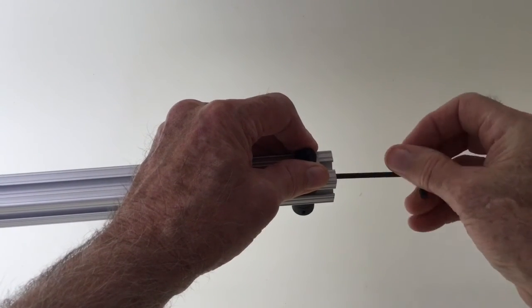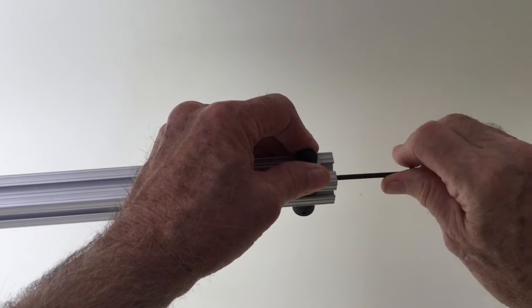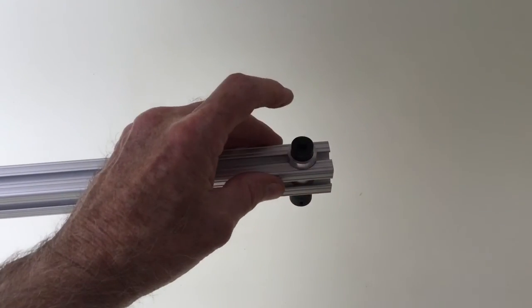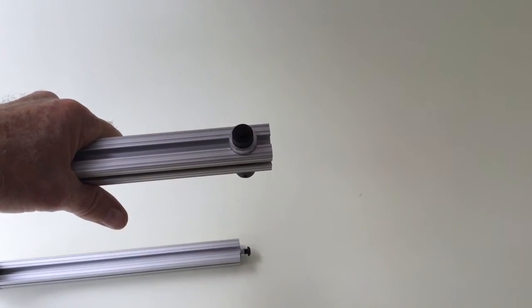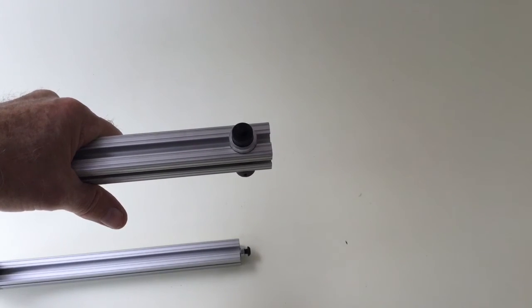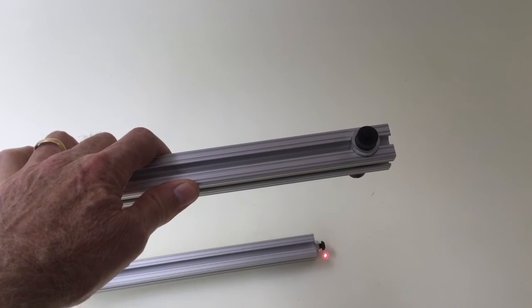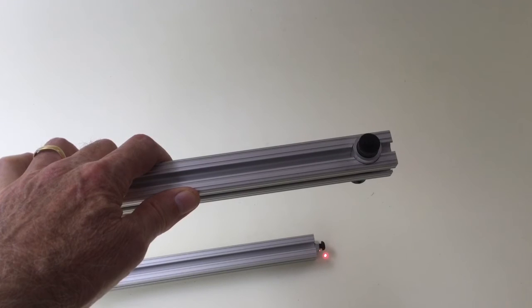When you're not using the laser, turn it off to conserve the batteries. In order to make an accurate measurement once inside of your bowls or hollow forms, it's important that the laser touch the head of the screw in the lower arm.